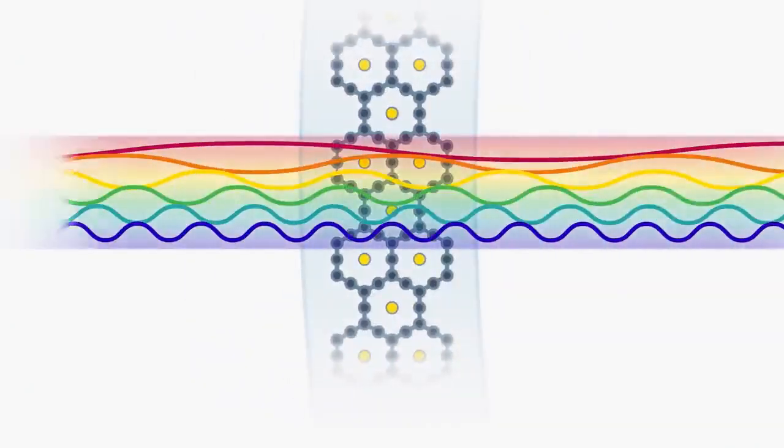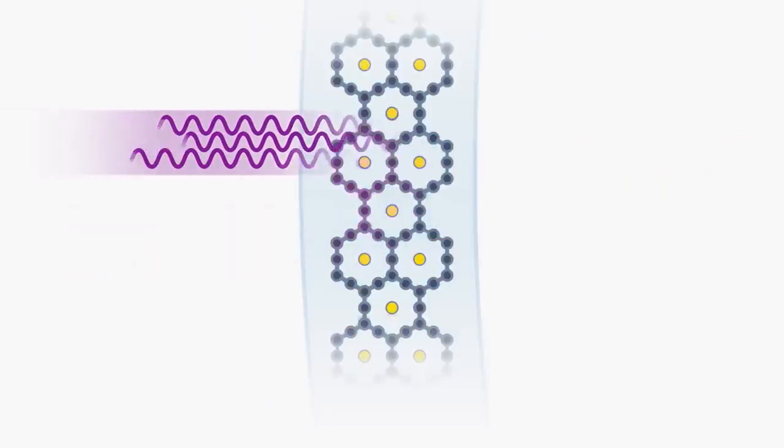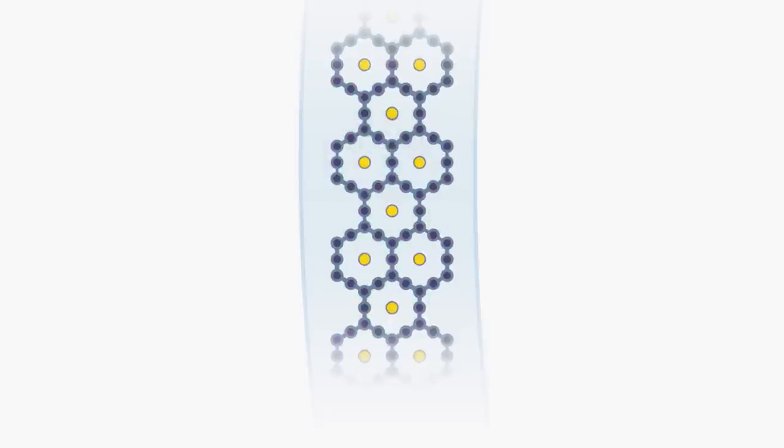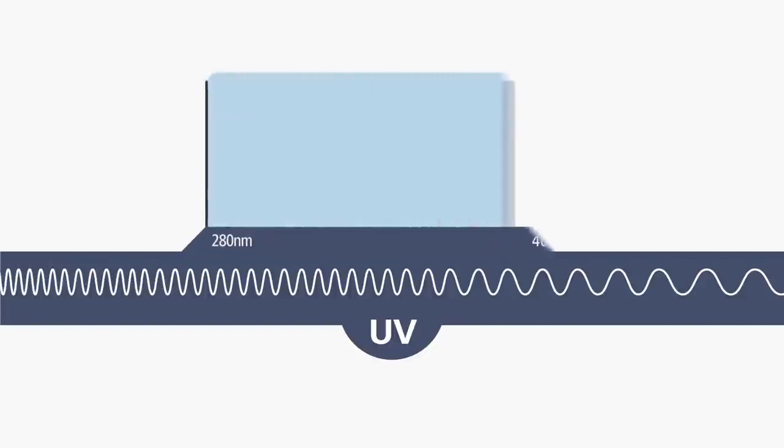Visible light can pass through the molecule structure of the lens. But due to their higher energy levels, UV rays with shorter wavelengths will be absorbed by Zeiss UV Protect technology. This blocks UV radiation up to 400 nanometers.